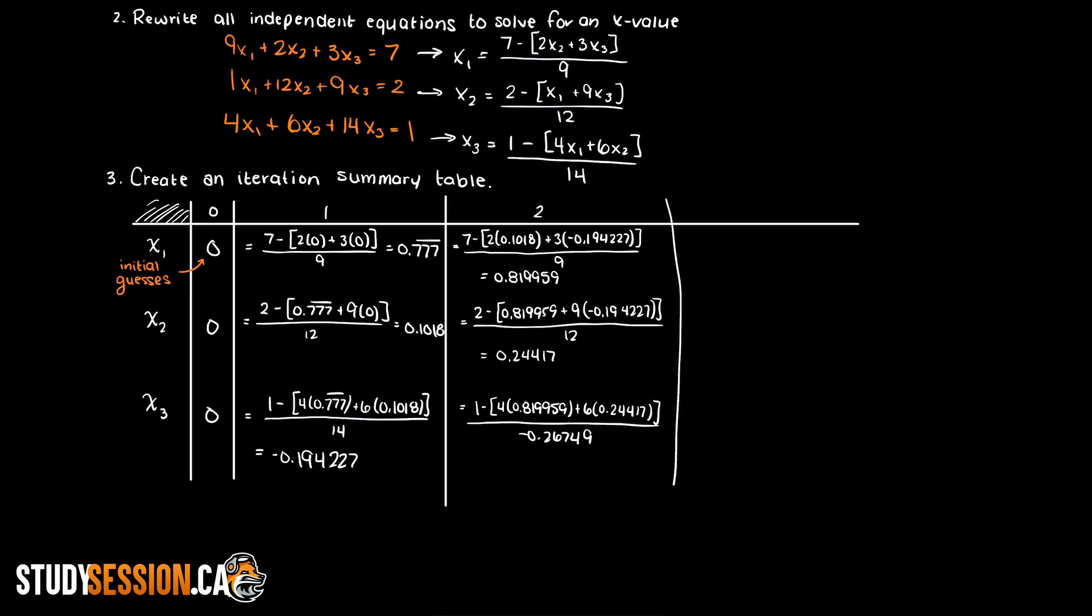Alright, so after 5 iterations these are the x values that we arrive at. Although we could keep going, I hope that you have an understanding at this point. That is a large benefit to iterative numerical methods. We can stop at any point we want, we are just trading off accuracy for computation time.